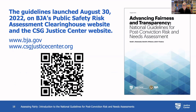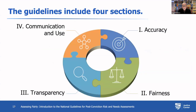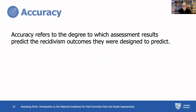The guidelines launched August 30th, 2022 on BJA's Public Safety Risk Assessment Clearinghouse website, as well as the CSG Justice Center website. The full title is Advancing Fairness and Transparency: National Guidelines for Post-Conviction Risk and Needs Assessment. The guidelines have four sections: accuracy, fairness, transparency, and communication and use. Ultimately there are 13 guidelines total.